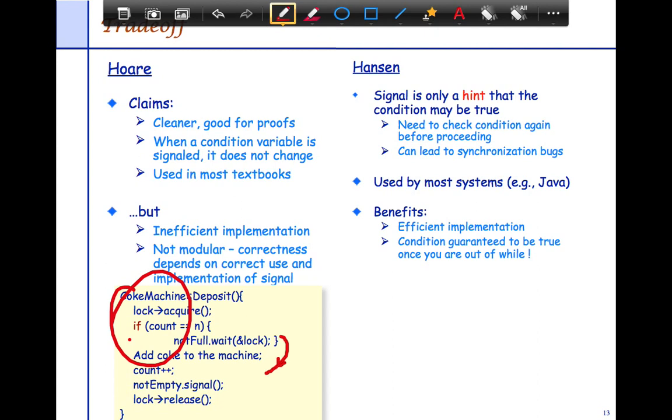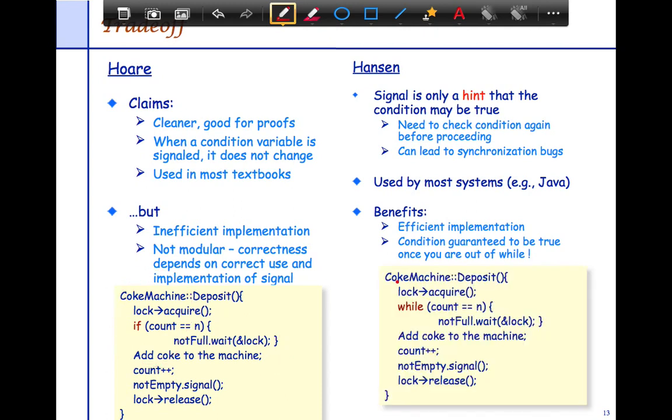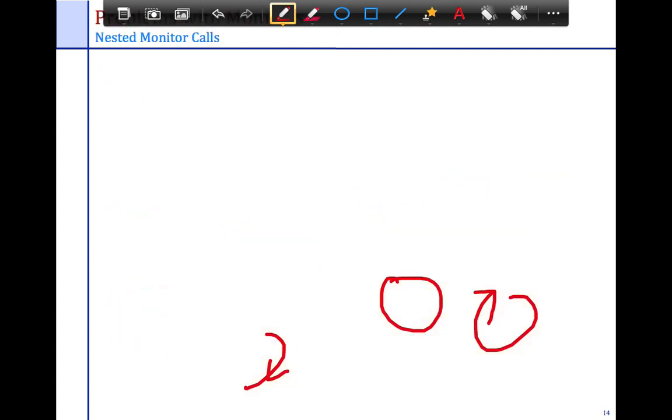In the Mesa or the Hansen style monitors, signaling is only a hint that the condition may be true. You need to check again before proceeding. And the benefit is that it's just easier to implement. And in this case, you would use the WHILE. So not the WHILE for the Mesa ones, and not the IF for the Hoare ones. So in this case, you would always check the condition again. In this case, in the Hoare case, you would just proceed to the next step or the next instruction.